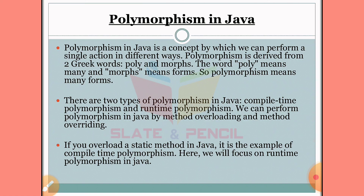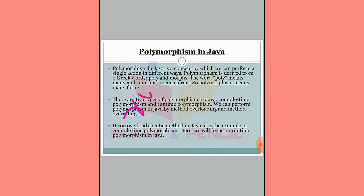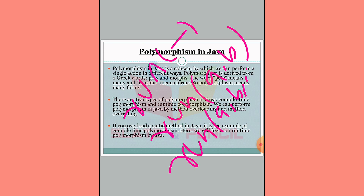We can perform polymorphism in Java by method overloading and method overriding. Method overloading means the same name but a different signature — we have multiple methods with the same name but different parameters.